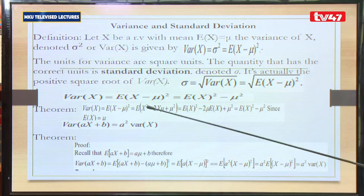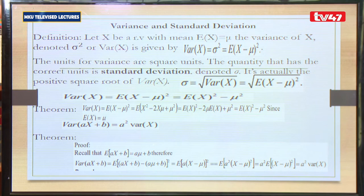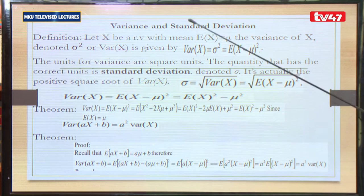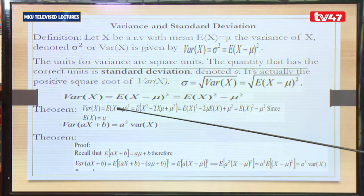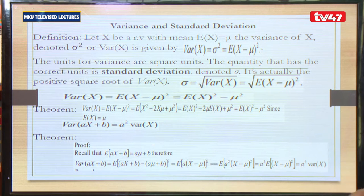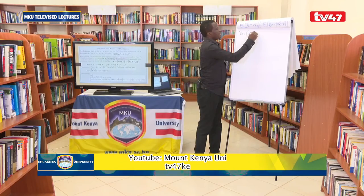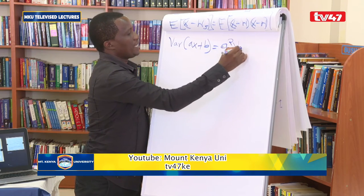The units for variance are square units. The quantity that has the correct units is standard deviation, denoted by σ. If σ² denotes variance, then standard deviation is the square root of variance, so σ alone signifies the standard deviation. A theorem states that the variance of ax + b equals a² times the variance of x.